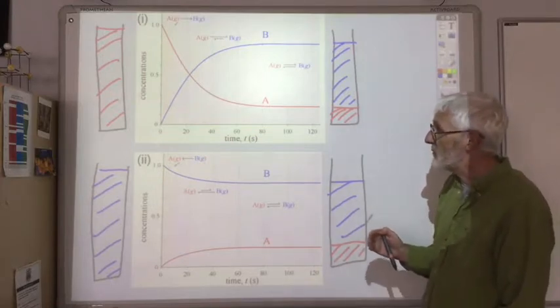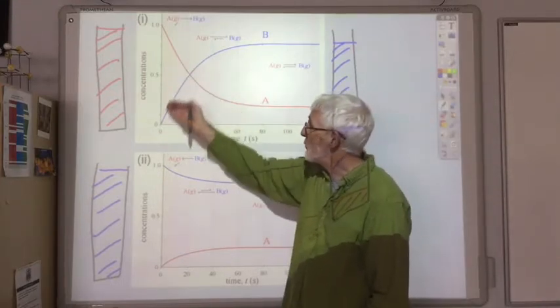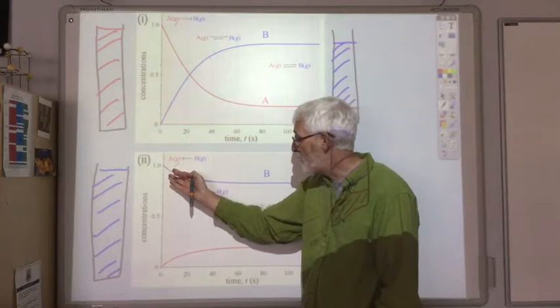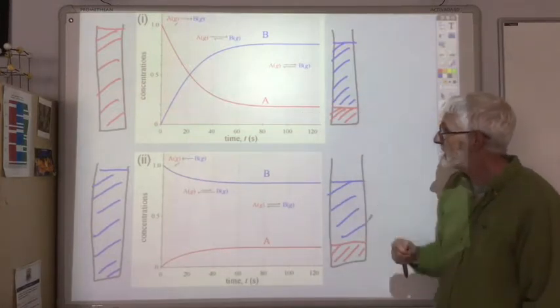You'll always end up at the same equilibrium point for a given reaction. No matter whether you start with all A and no B, or you start with all B and no A. You still end up at the same place.